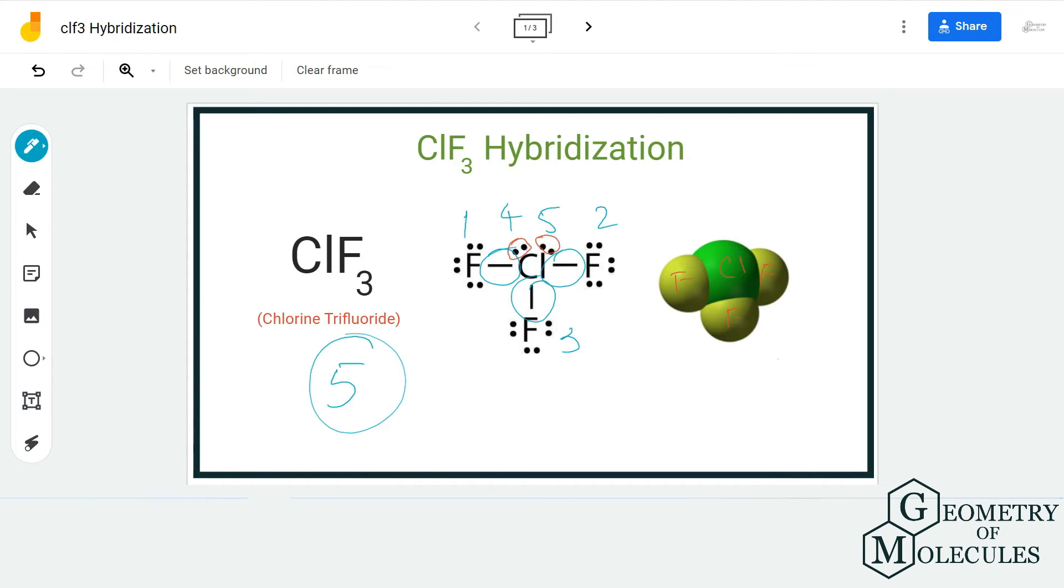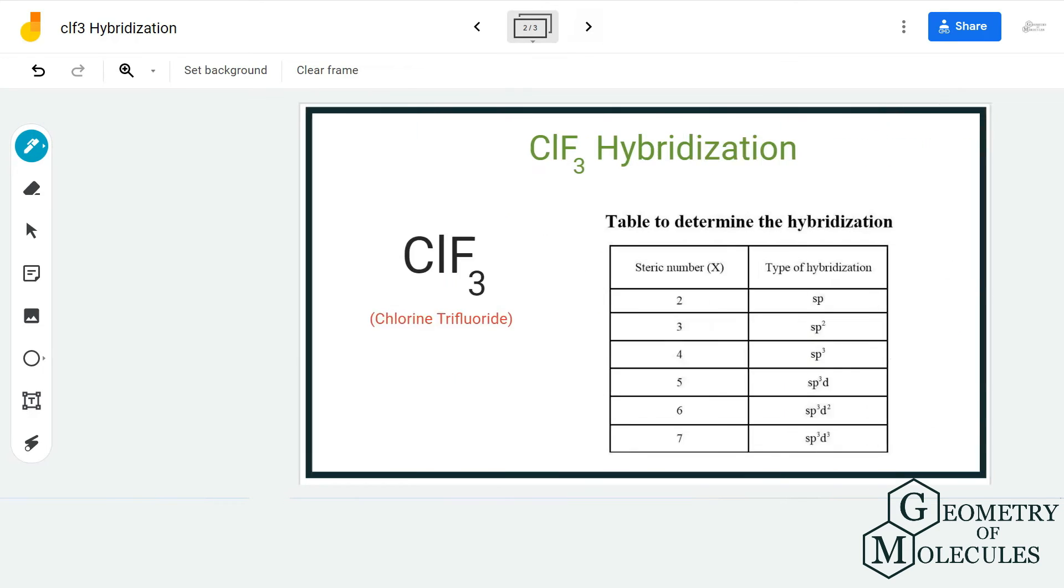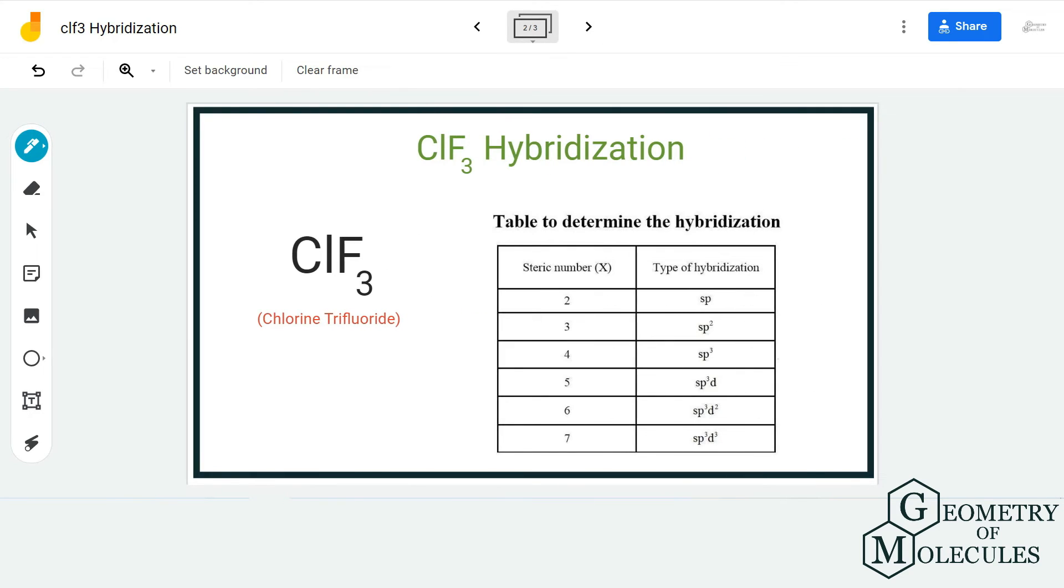regions around the central atom. And to accommodate all these electrons, it will need to form five hybridized orbitals. As a result, if you look at its table, the number five corresponds to sp3d hybridization. That is because